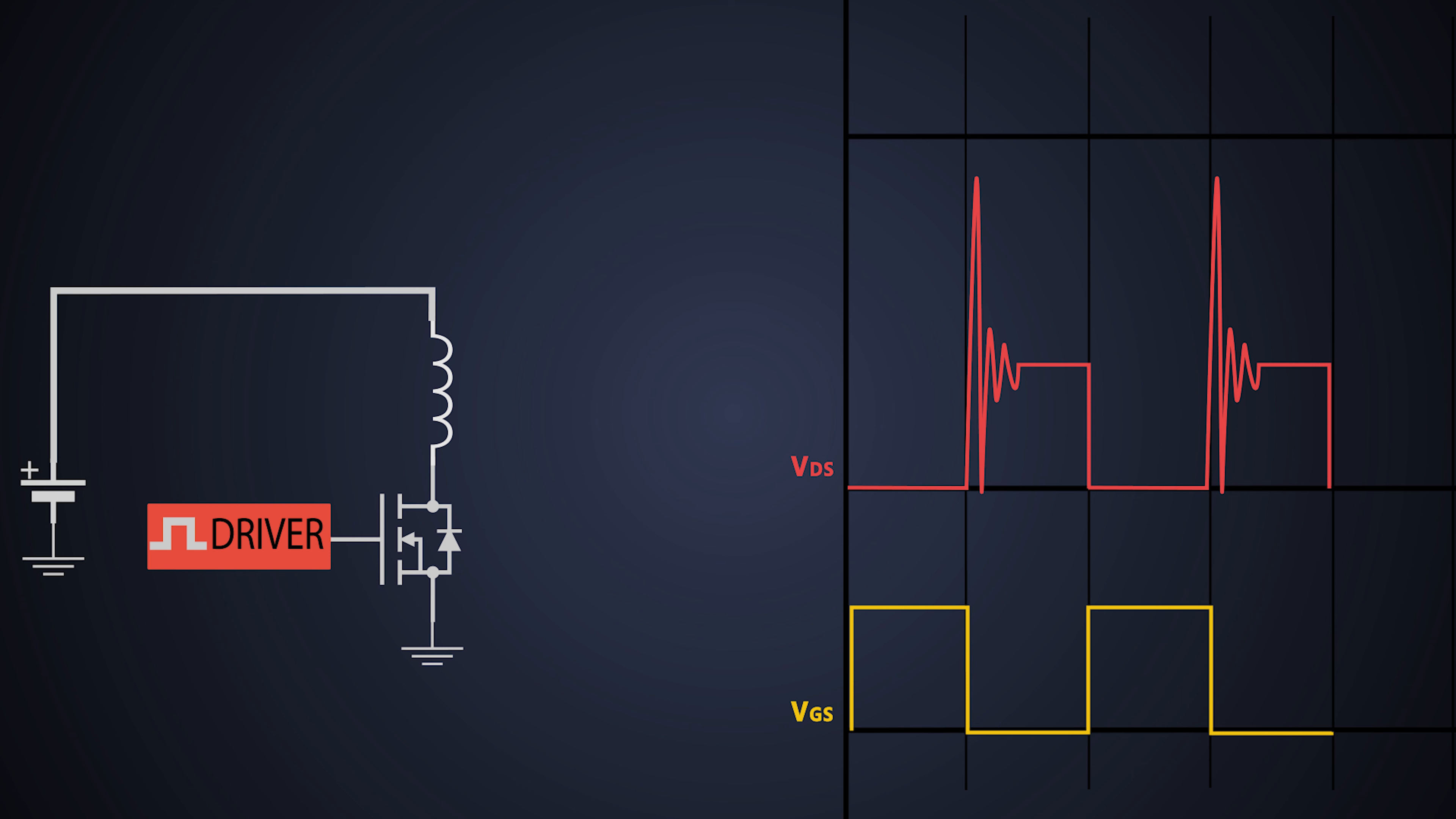This happens because the inductor opposes change in current. Whenever the MOSFET is turned on or turn off, there is a change in the flow of current in the circuit. The inductor stores the electromagnetic energy inside of it. So when the MOSFET is turned on, the current will flow to the inductor and when we turn off the MOSFET, the current stops flowing to the circuit. This inductor doesn't like that and it forces the flow of current through the circuit in the same direction. Hence due to change in current with respect to the time and the inductance of the inductor, it induces some voltage at this point, which is known as the flyback voltage of the inductor.